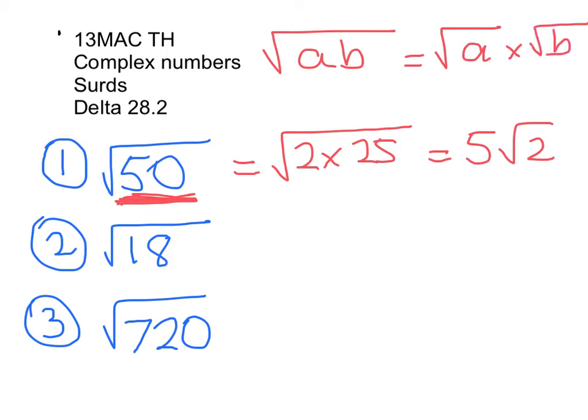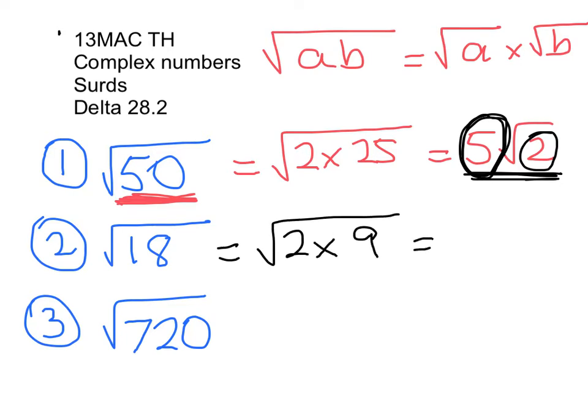So here, our final answer, simplify the surd, means write it with as big a number outside here as you can, and a smaller number inside here. So in this one here, we're looking for a perfect square, and we see that that's equal to 2 times 9. The square root of 9 is 3, so it's 3 root 2.